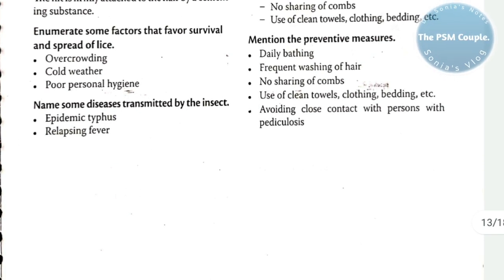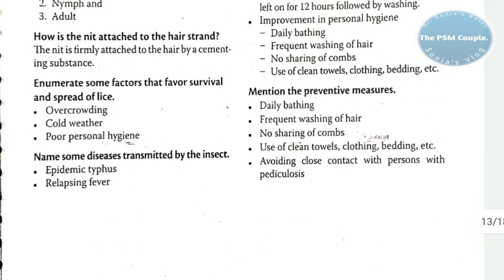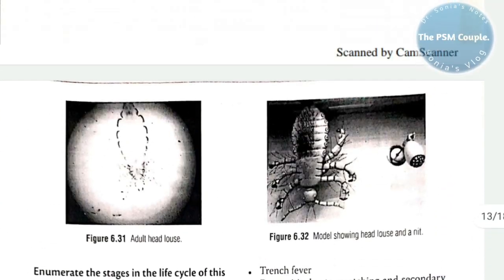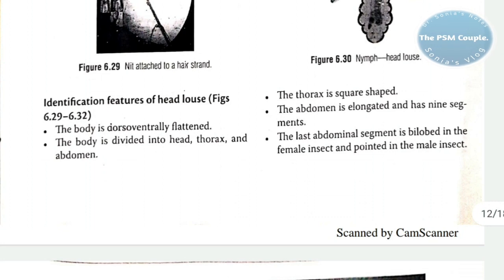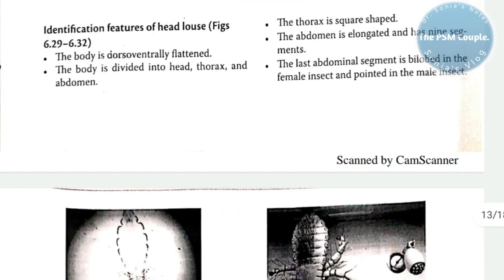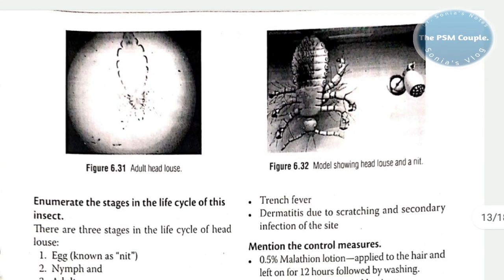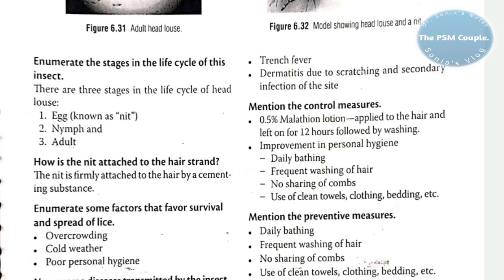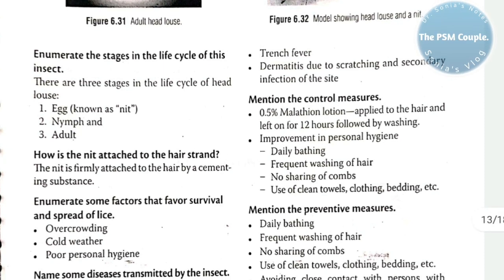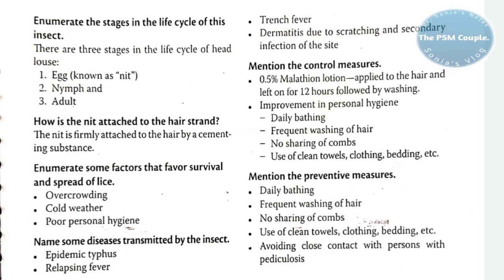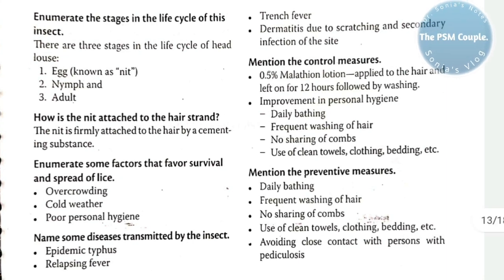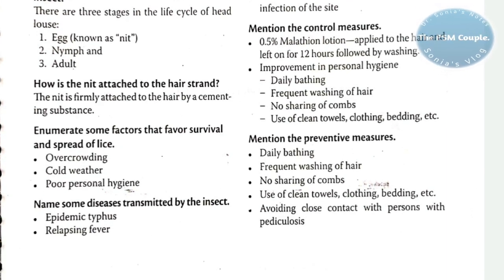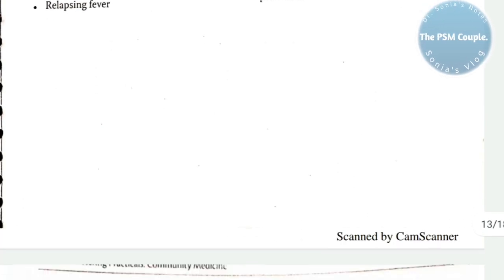To summarize the head louse: body is dorso-ventrally flattened, thorax is square-shaped, abdomen is elongated with nine segments. Stages are egg (nit), nymph, and adult. Factors favoring spread are overcrowding, cold weather, and poor personal hygiene. Diseases transmitted include epidemic typhus, relapsing fever, trench fever, and dermatitis. Control: 0.5% malathion lotion, bathing, no sharing of combs, use of clean towels, clothing, and bedding.